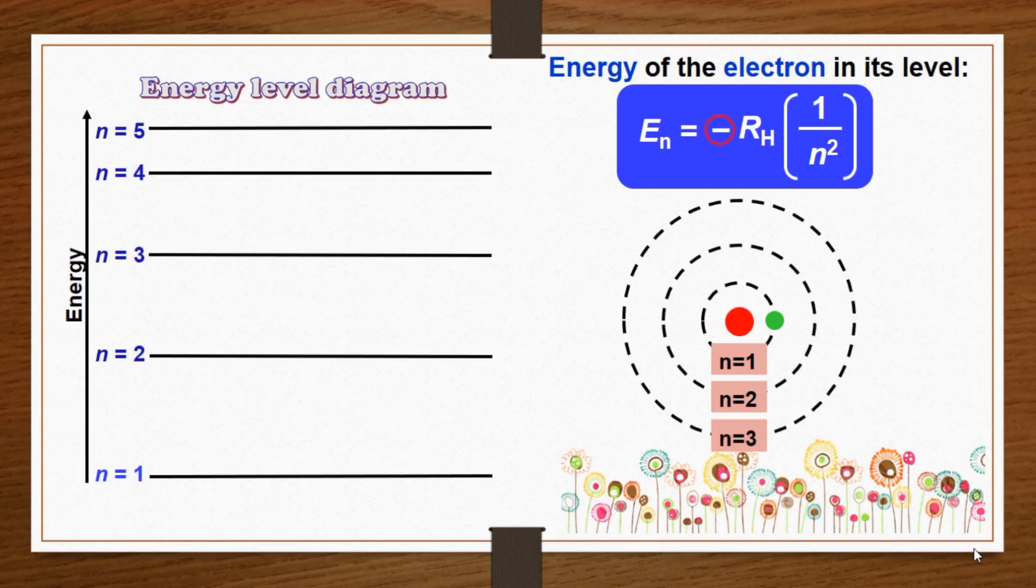The negative sign in the equation is an arbitrary convention, signifying that the energy of an electron in the atom is lower than the energy of a free electron, which is an electron that is infinitely far from the nucleus. The energy of the free electron is arbitrarily assigned a value of zero.